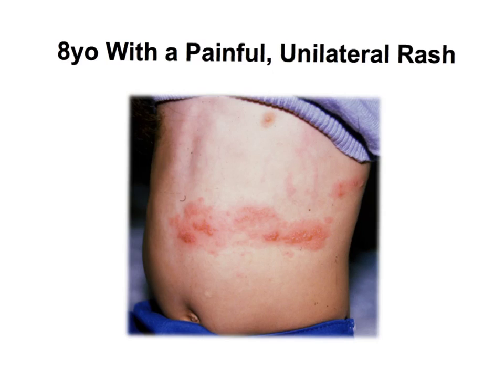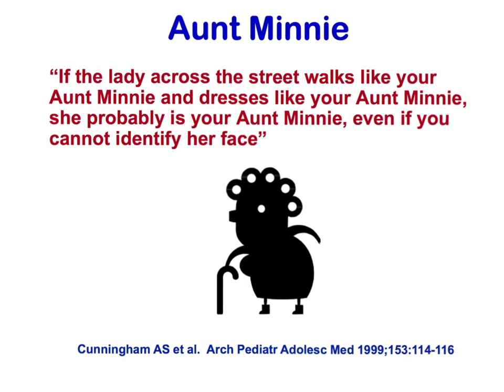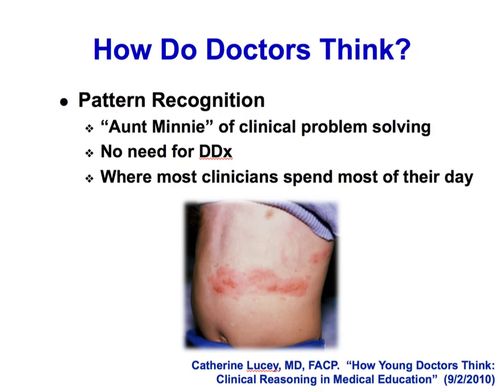The other thing is called pattern recognition. You see a unilateral vesicular rash — zoster, shingles. How did you know that? You've seen it before. They call that the 'Aunt Minnie' — from an article about Aunt Minnie, who had a certain way of walking, and whenever you saw someone from a distance you knew it was her because of the way that person looked. You walk in the room, you see that rash, and you know. That's pattern recognition.